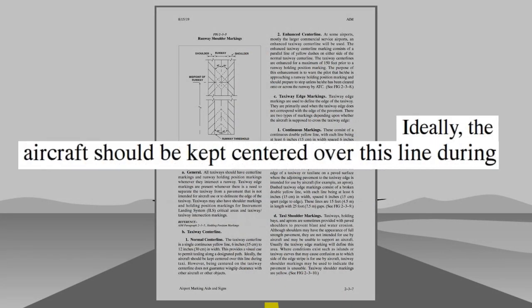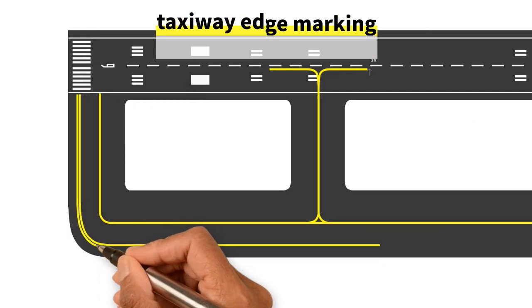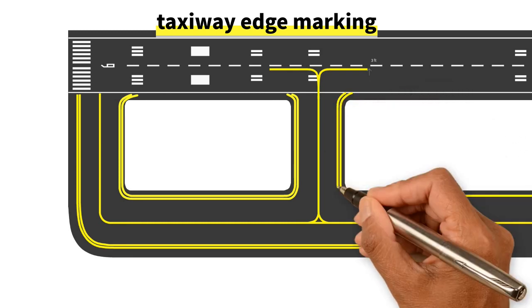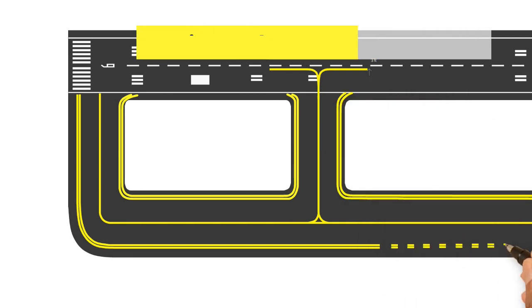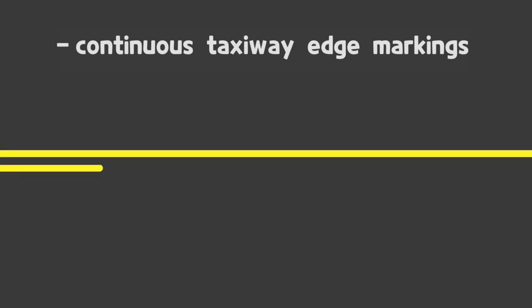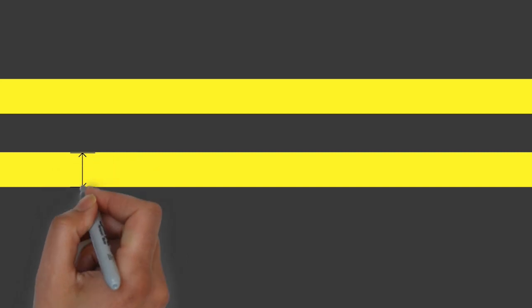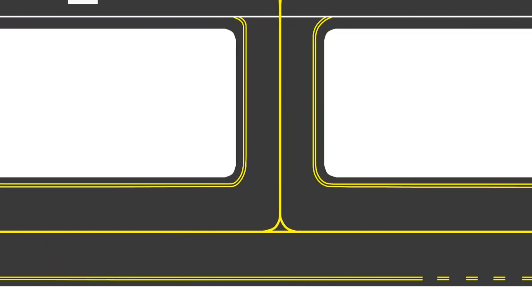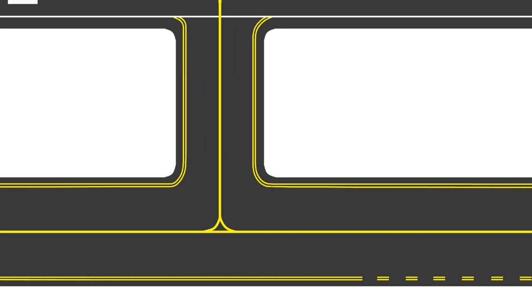Taxiway edge markings are used to delineate the edge of the taxiway. Taxiway edge markings can either be continuous or dashed. Continuous taxiway edge markings consist of a continuous double yellow line, each being at least six inches in width and spaced six inches apart. Continuous taxiway edge markings are used to identify the taxiway from the shoulder or some other surface not intended to be used by aircraft.